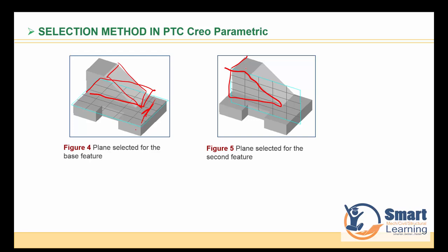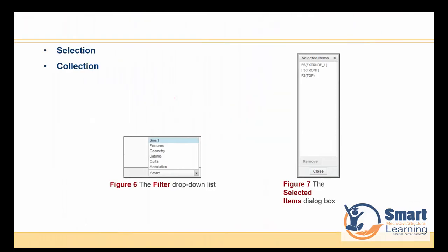In PTC Creo, you have a Smart option as well as filters for Features, Geometry, Datums, Quilt, Annotation, and others. During selection, you can filter which particular plane you are interested in selecting — a feature, a datum, or others. This selection filtering is very important and will be discussed further.